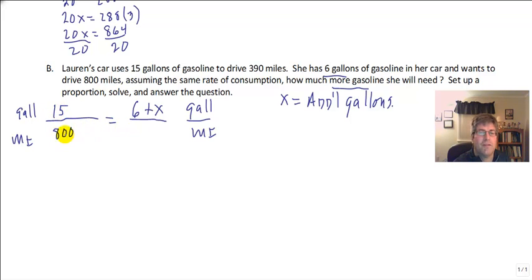And actually, this is 15 over 390. I made a mistake there. So 15 gallons will get 390 miles. How many more gallons over 6 will she need to drive 800 miles? Now my proportion is correct. 15 is to 390 as 6 plus x is to 800.